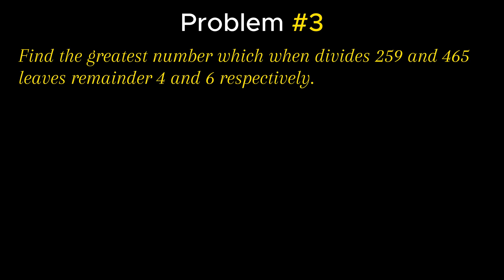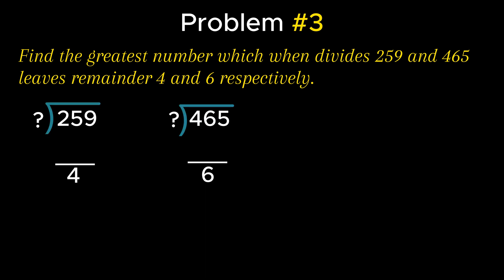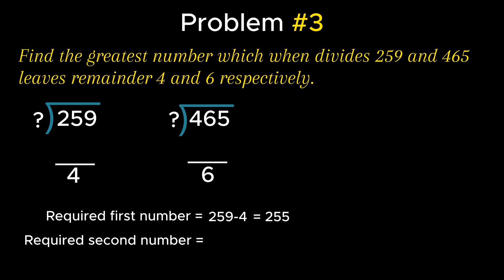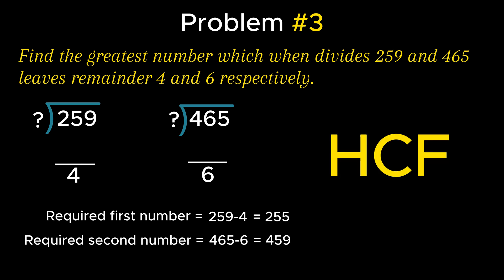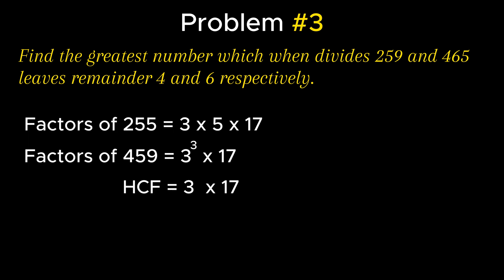Problem 3 states: find the greatest number which when divides 259 and 465 leaves remainders 4 and 6 respectively. The number that divides 259 and 465 is the common factor giving remainder 0. So we balance: first number equals 259 − 4 = 255, and second number equals 465 − 6 = 459. The number that perfectly divides both equals the HCF of 255 and 459, which is the product of 3 and 17, equaling 51.